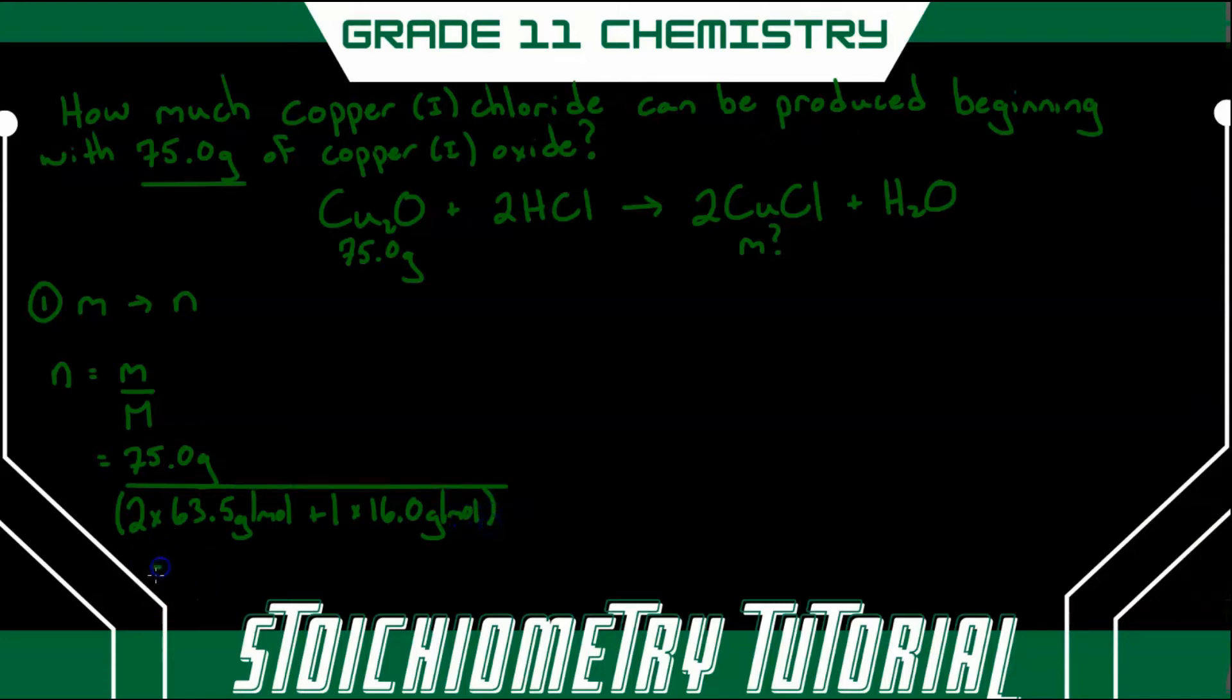All right, when we put that into our calculator, we get a total of 0.524 moles of copper 1 oxide. So there's step one.